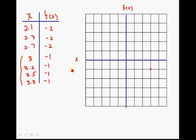And we know that when x is 3.2, f(x) is negative 1. We know that when it's 3.5, f(x) is negative 1, and so on. So it just goes like this. But it never gets to 4, so it's got to be an open circle. There it is right there.